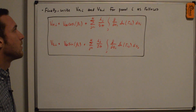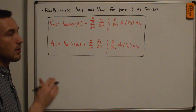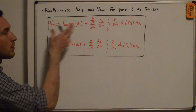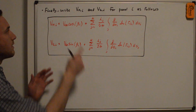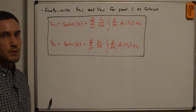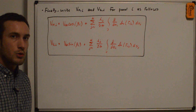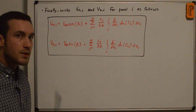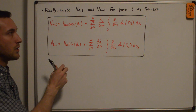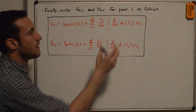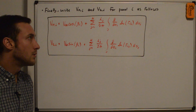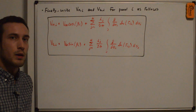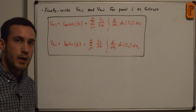Finally, we write the normal and tangential velocity components for panel i at its control point. All we've done in this entire video is take the uniform flow partial derivative terms and replace them with simplified expressions in terms of V_infinity — which we know — and beta_i from the panel geometry — which we also know. We still have the partial derivative term inside the integral, which is not as straightforward. The next video will go through in detail how to solve for that integral term. Thanks for watching.